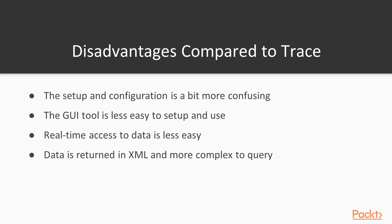The other thing is that real-time access to data is less easy. Part of this is the nature of trying to keep resource usage down. And lastly, Extended Events decided to store all their information in XML, which is kind of complex to query. People don't like it. I think if Extended Events were being implemented today it would be JSON, but we would have similar issues.